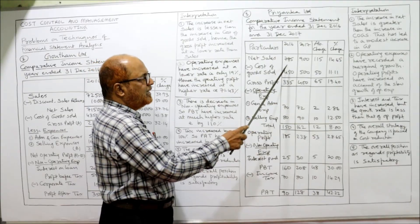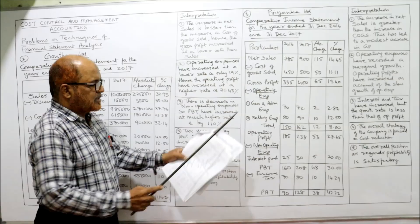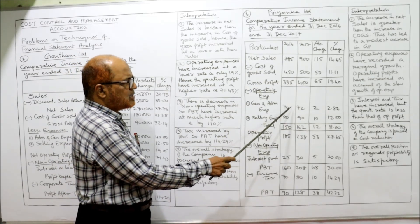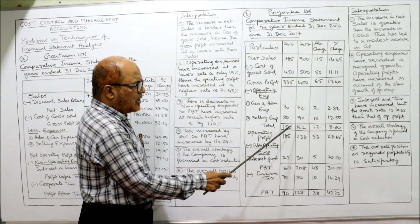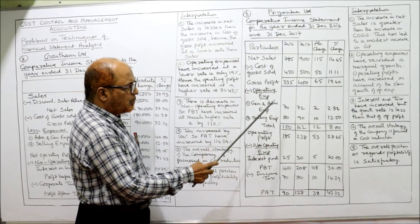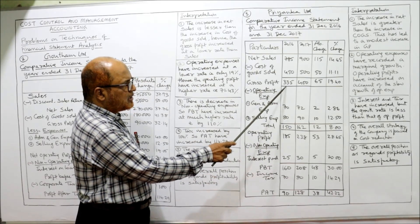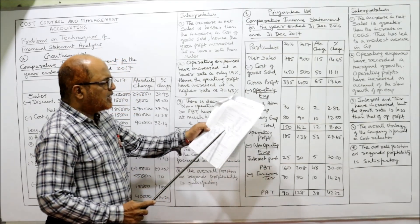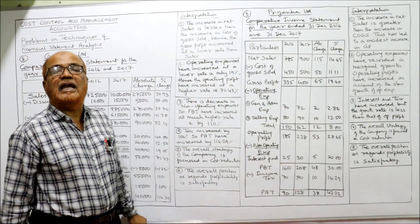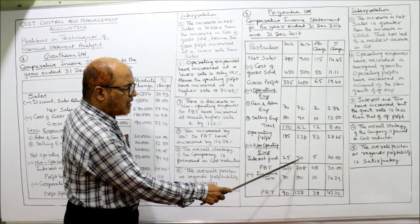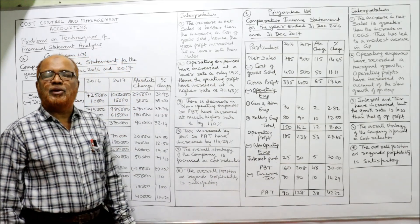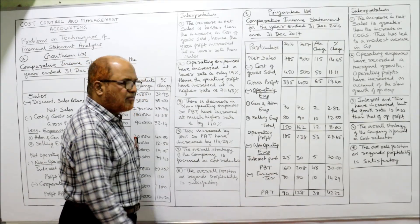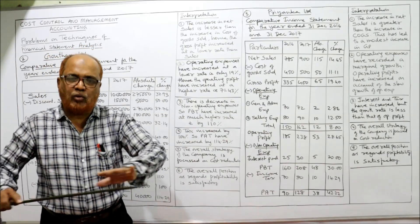Fill up the data in the first two columns first. Net sales: 785 and 900. Cost of goods sold: 450. Deduct to get gross profit: 335 and 400. Operating expenses — general/administrative expenses: 70 and 72; selling expenses: 80 and 90 — total operating expenses: 150 and 162. Gross profit minus operating expenses gives operating profit: 335 minus 150 is 185, and 400 minus 162 is 238. Deduct non-operating expenses — interest paid: last year 25, current year 30 — giving PBT: 160 and 208. Income tax: 70 and 80; profit after tax: 90 and 128.